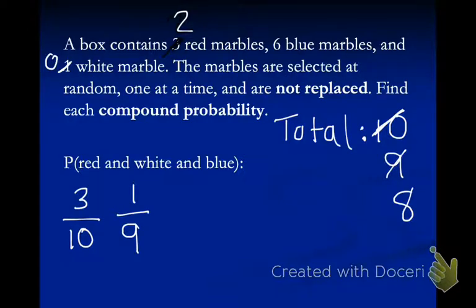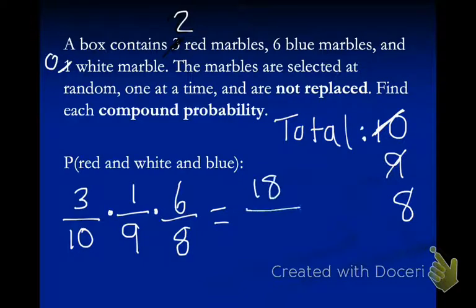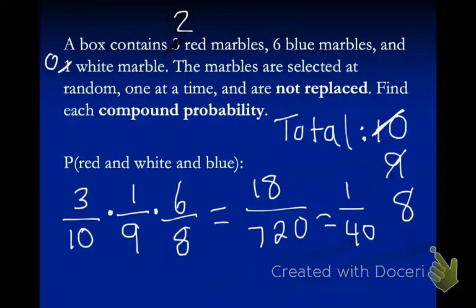My last probability of getting a blue is six out of eight. Because this is all 'and,' I'm going to multiply straight across: three times one times six is eighteen, over ten times nine times eight, which is seven hundred twenty. I can simplify that to one out of forty, so there's a one in forty chance of this happening. Turning that into a percent gives two point five percent.